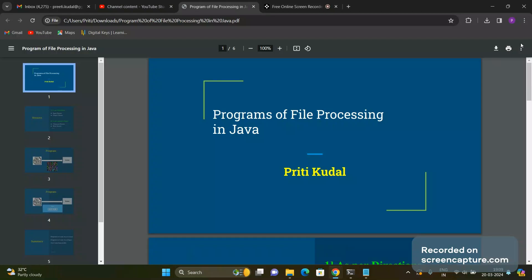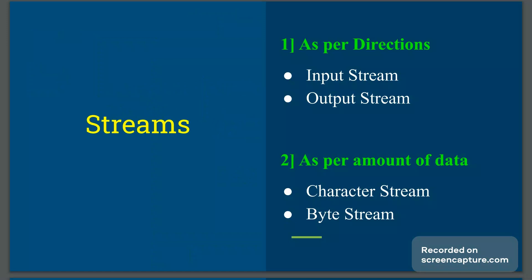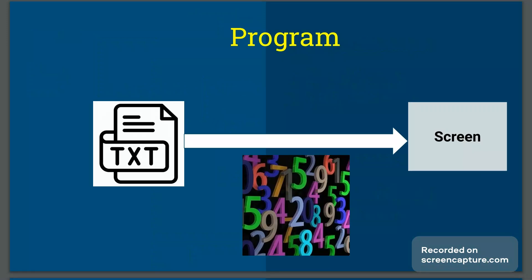Welcome back. Let us see a few applications of file processing in Java. We are going to use streams for performing these file processing operations. We will write a Java program that counts the number of digits present in a text file and display the result on screen. The source is the file and the destination is the screen, so we need to create an input stream to read from the file and output will go to system.out.